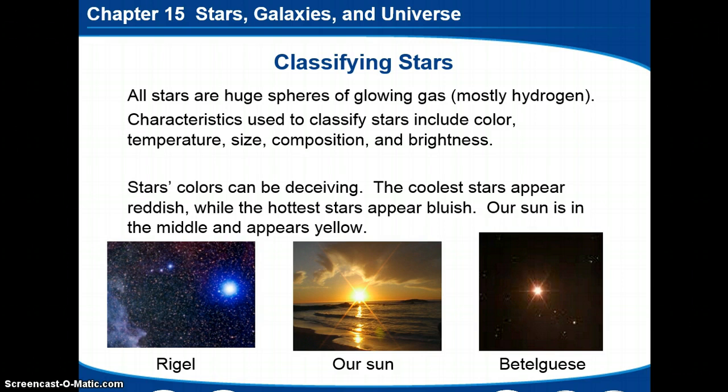So hot is blue, medium is yellow, and cool is red, as we see in those three examples on the bottom. Both Rigel and Betelgeuse are in the constellation Orion. They're two of the brightest stars in the sky. And then other characteristics we'll look at include things like temperature, size, composition, what are they made out of, and their brightness.